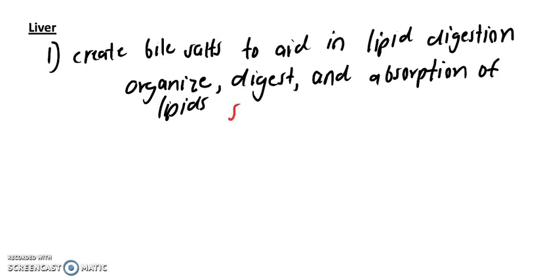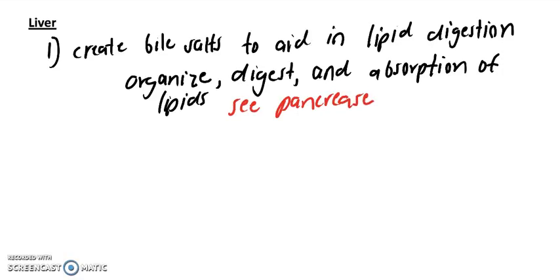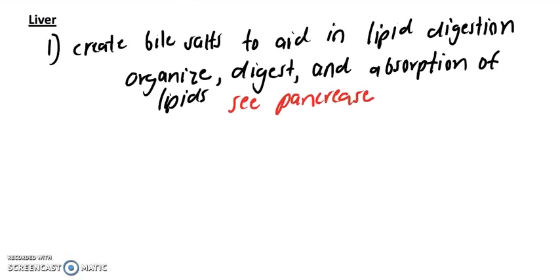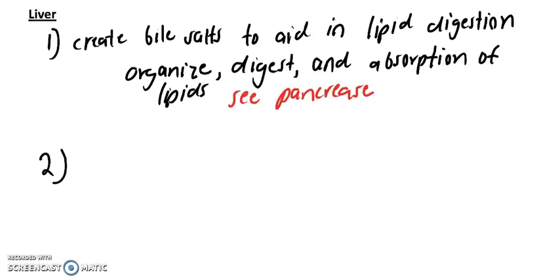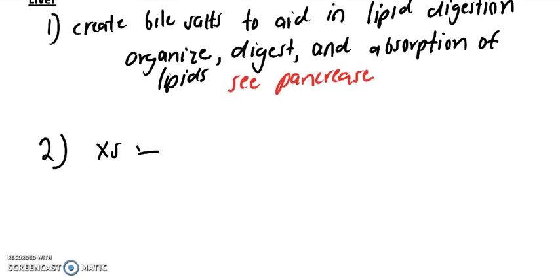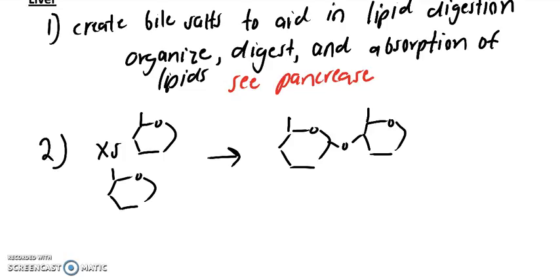See pancreas from the previous video. The second function of the liver is, if we have excess glucose, you want to store some of that for future use. These are going to combine in the liver and create something called glycogen.